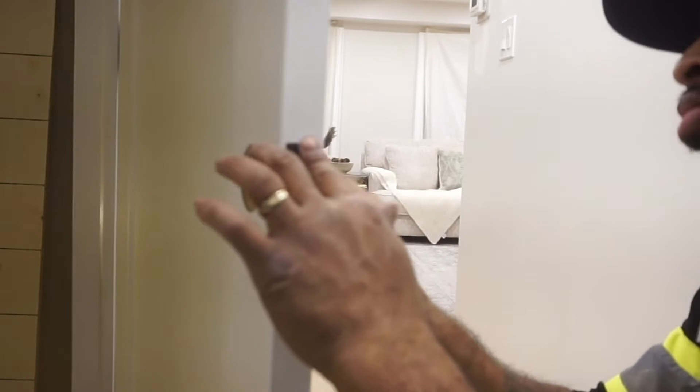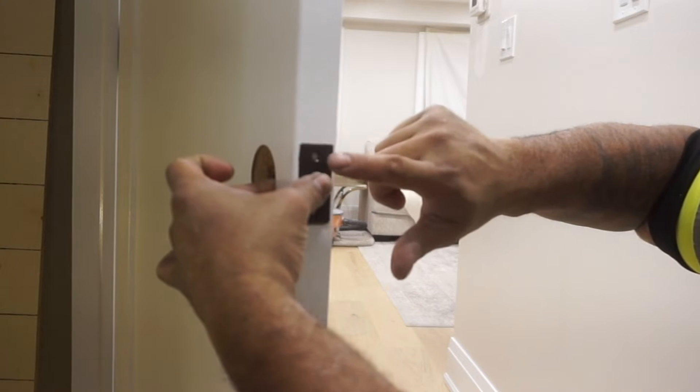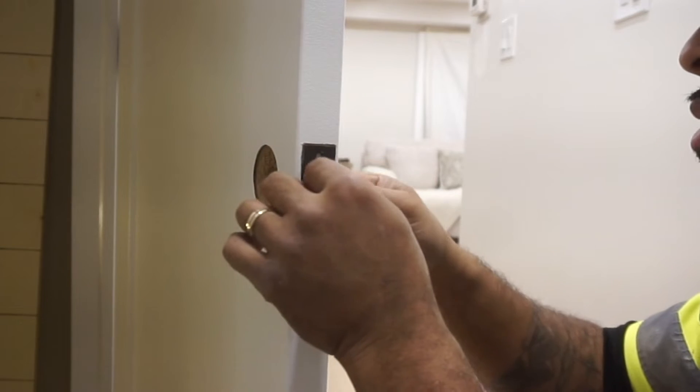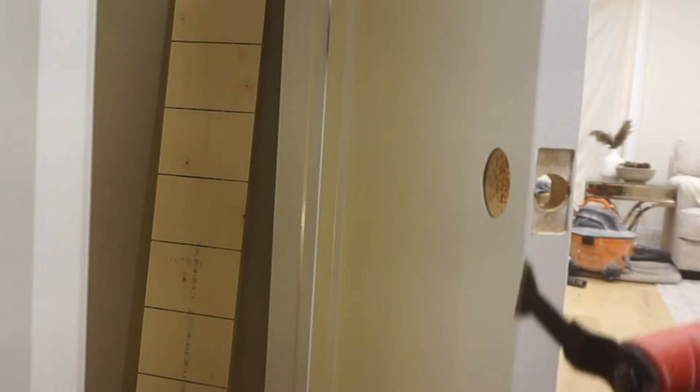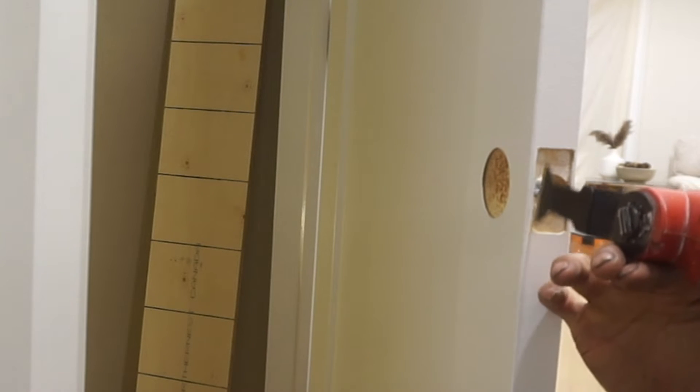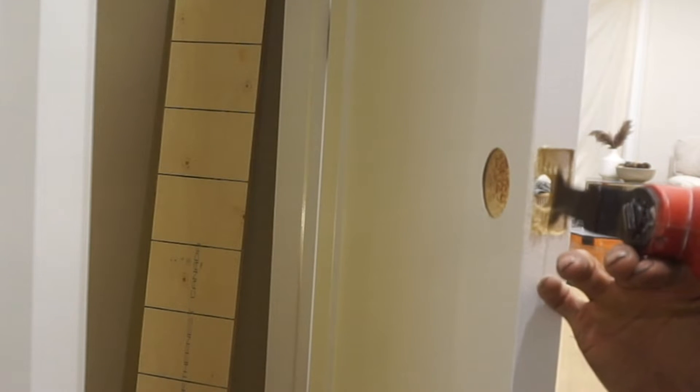I would recommend using a chisel to just chisel out a little bit more so that your door will accommodate for that space on the back of the latch to get it flush. I however, I'm going to be using this oscillating tool. It's just much faster, I'm comfortable using the tool, and it's going to save me a ton of time.